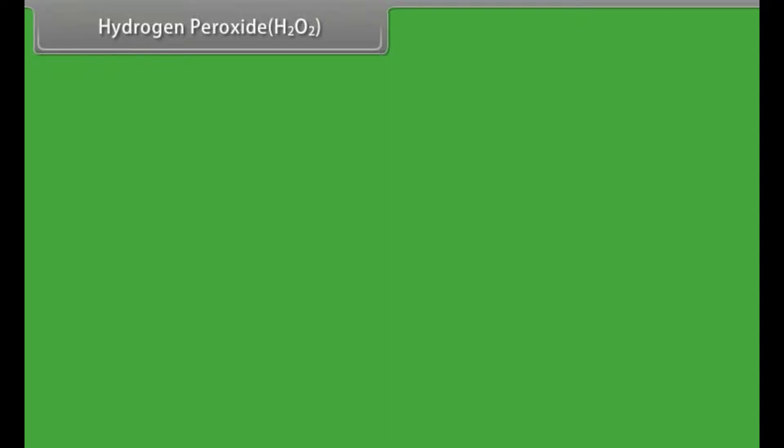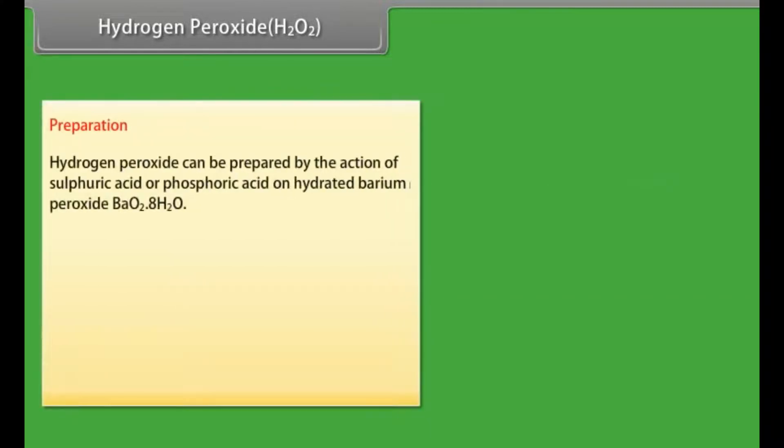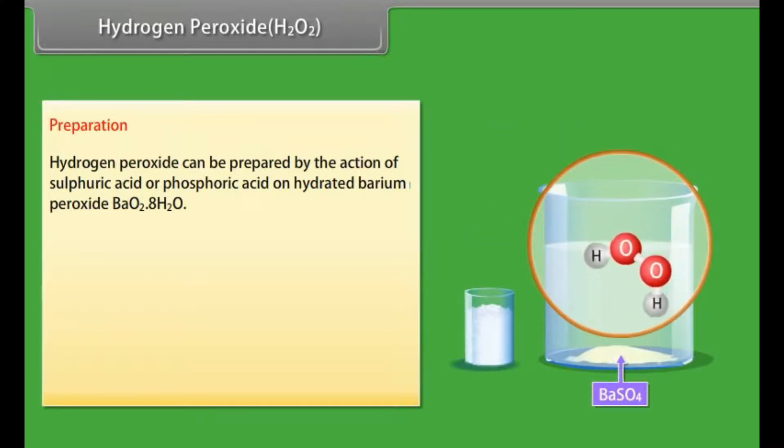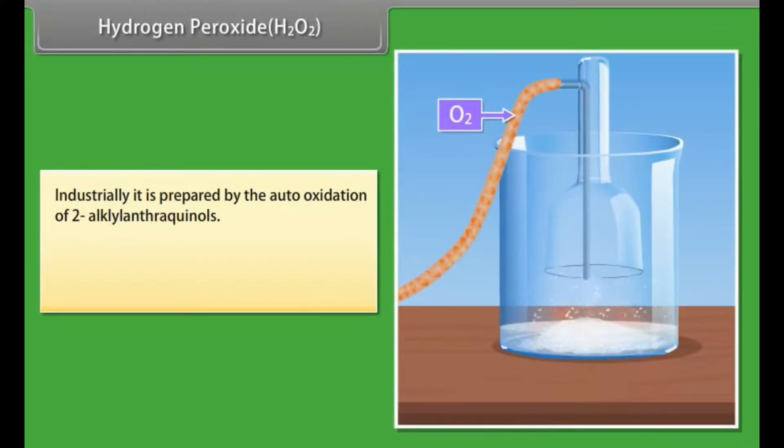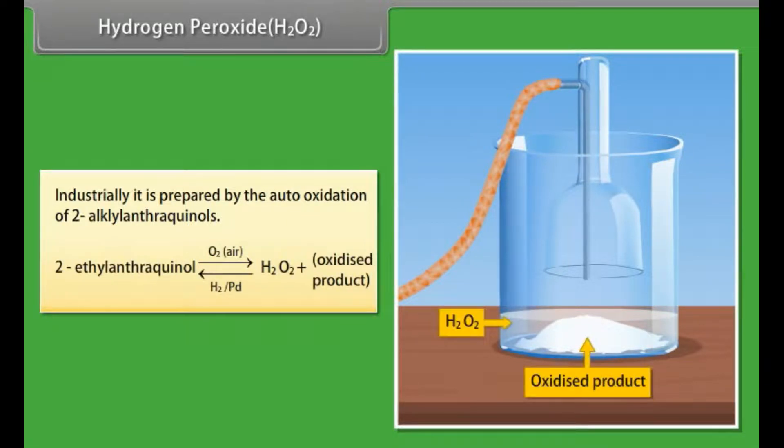Hydrogen peroxide can be prepared by the action of sulfuric acid or phosphoric acid on hydrated barium peroxide. Anhydrous barium peroxide does not react readily with sulfuric acid because a coating of insoluble barium sulfate is formed on its surface which stops further action. Therefore, hydrated barium peroxide BaO2·8H2O must be used. Industrially, it is prepared by the auto-oxidation of 2-alkyl-anthraquinols. When 2-ethyl-anthraquinol is oxidized in the presence of hydrogen or palladium, it gives hydrogen peroxide.